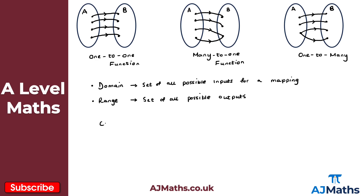For composite functions, what we mean is a combination of two or more functions. When we combine two or more functions, we create a new function called a composite function. Generally speaking, when we combine functions — say f(x) and g(x) — we get fg(x) and gf(x). It's worth noting that generally speaking these two are not equal, so the order of the composition of functions does matter.